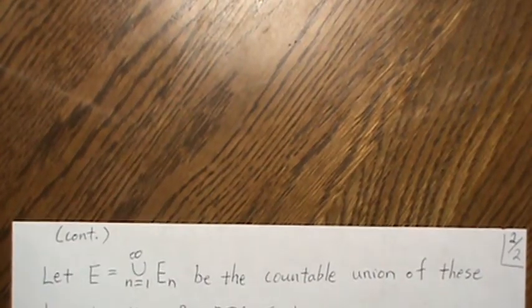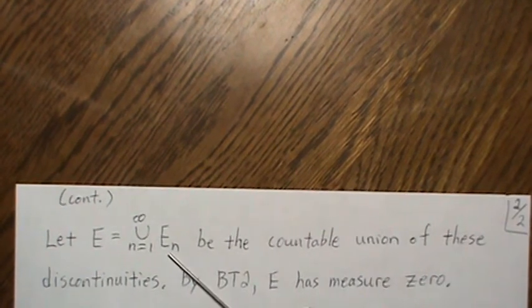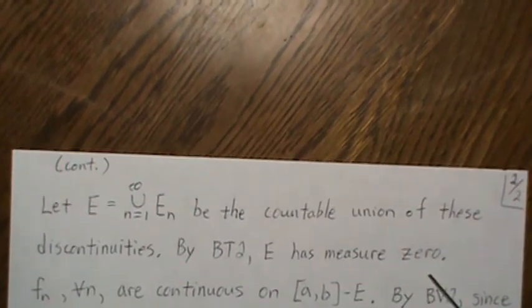Now if we let E be the countable union of all these discontinuity points, then by background theorem 2, E has measure zero.